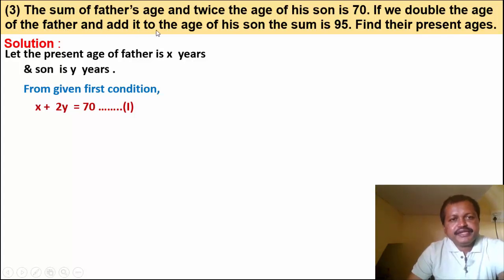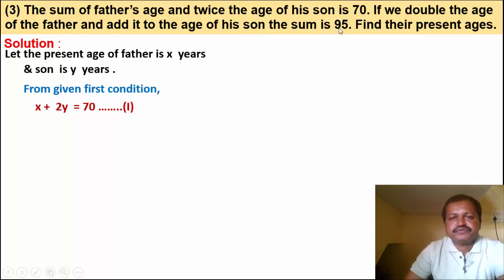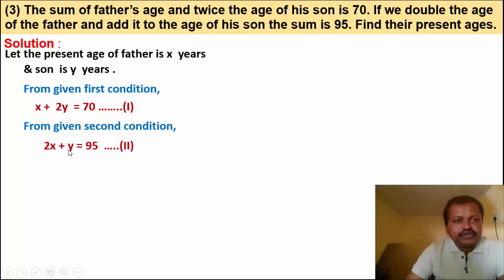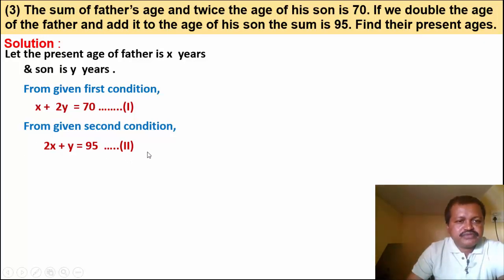From the second condition: double the age of father is 2x, and age of son is y. So 2x plus y is equal to 95. This is equation number 2.